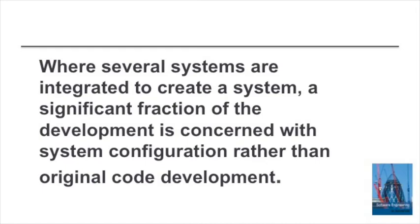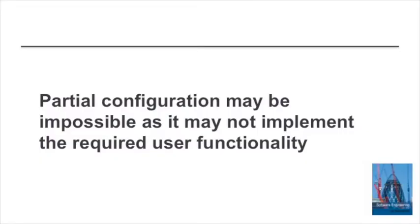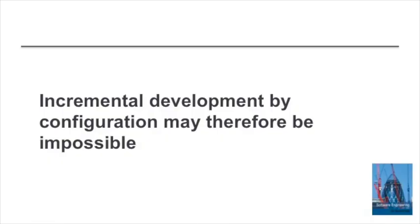There's lots of configuration in the development — it's not just a process of writing programs. Existing systems have to be adapted and configured to work in that environment. System configuration is not something that can be readily done in an incremental way. It's often the case that we configure existing systems to provide some functionality, but we can't semi-configure them to provide only part of that functionality — we have to do all of the configuration. So if this is a complex configuration exercise, it can't necessarily be done in a single agile iteration.